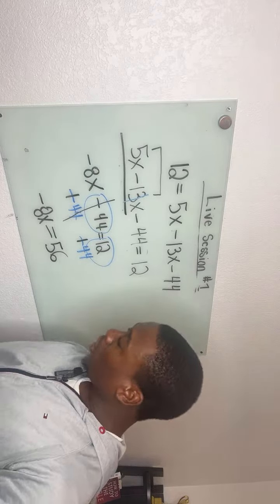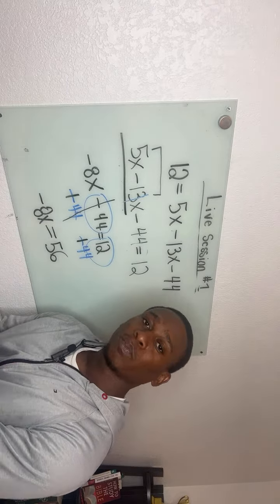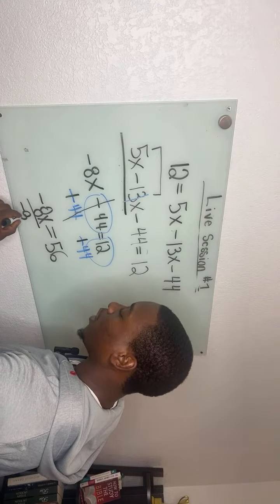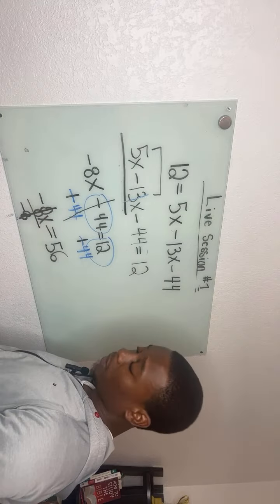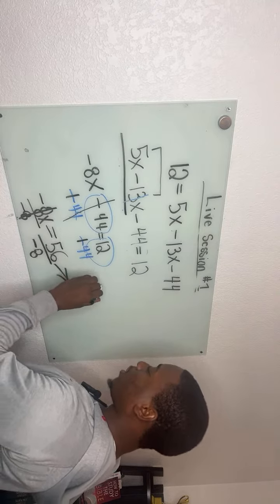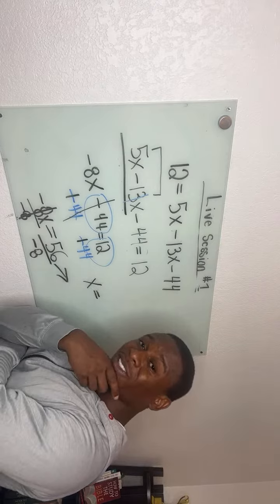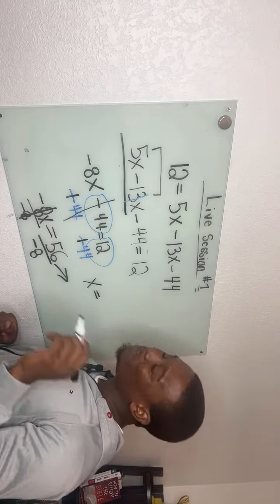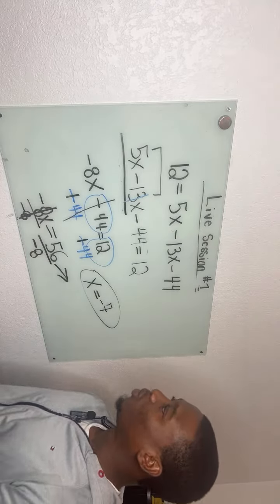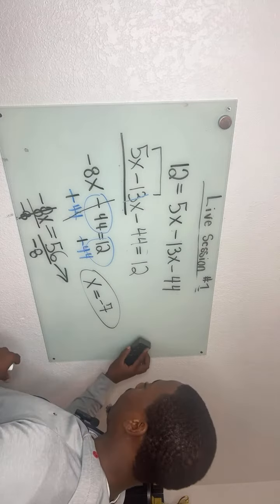Everybody knows what to do here: negative 8 multiplied by x gives us 56. As long as you don't forget your negative sign, we divide both sides by negative 8. x equals 56 divided by negative 8, which is negative 7. If you said positive 7 — don't let it finesse you. We got negative 7 as our final answer. You can double-check by plugging it back in.